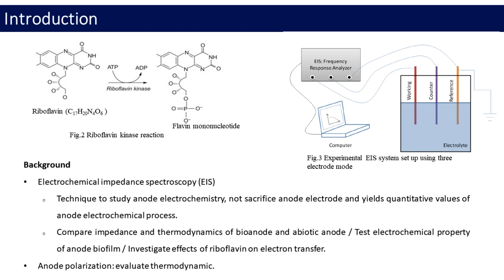To investigate anode electrochemistry, in this study anode EIS and polarization were conducted. Electrochemical Impedance Spectroscopy, EIS, is a technique to study anode electrochemistry without sacrifice anode electrode and yields quantitative values of anode electrochemical process. So author objectives are using EIS to compare impedance and thermodynamics of bioanode and abiotic anode, test electrochemical property of anode biofilm and investigate effects of riboflavin on electron transfer.